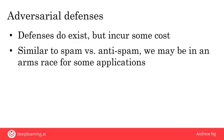For many AI systems, there may be no incentive for anyone to try to attack it. For example, if you're running an automatic visual inspection system to check if coffee mugs have scratches in your factory, not many people will have any incentive to fool your system into thinking a scratched coffee mug doesn't have a scratch on it. But there are going to be AI applications where attacks will occur as well.